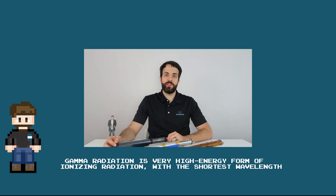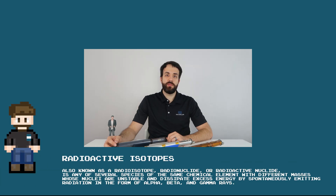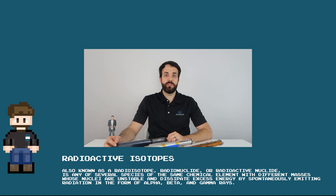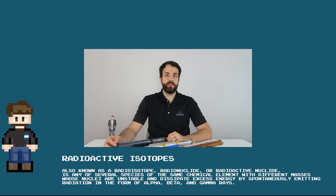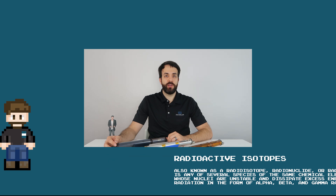Gamma radiation is radiation that is given off by radioactive isotopes like cesium, cobalt, uranium, potassium, and many others, and it's found all around us. Everywhere on earth there is some level of background radiation from rocks and different materials that contain these radioactive isotopes.